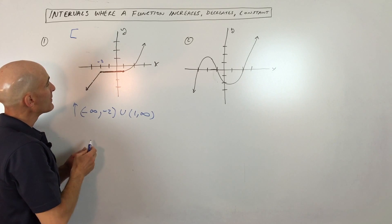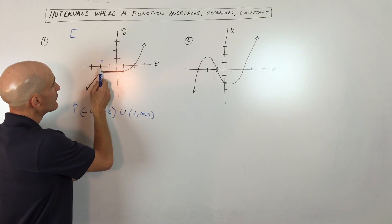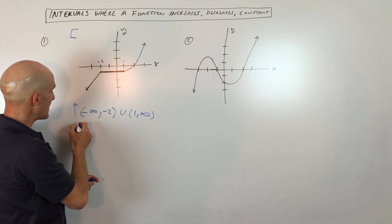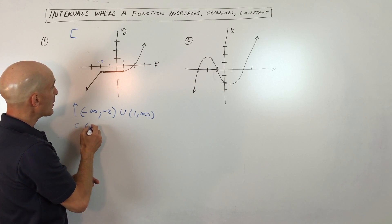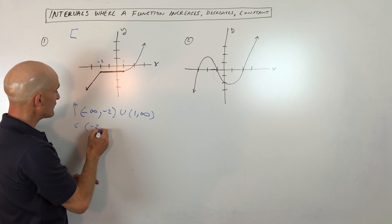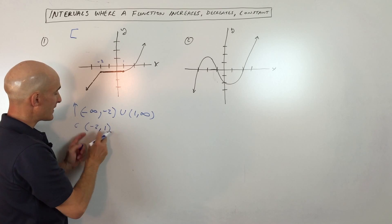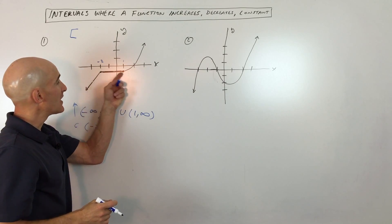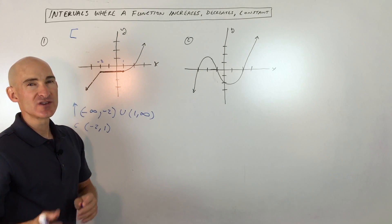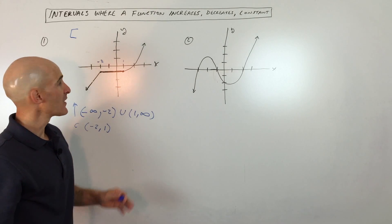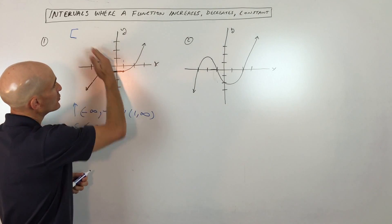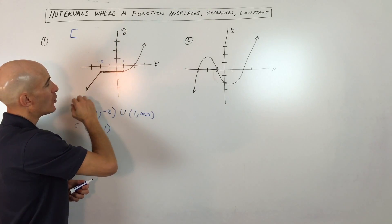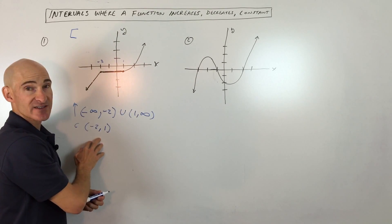So this is the increasing interval. Now you can see it's constant from x equals negative two to x equals positive one. We're going to say constant — I'll just put a C there — and go from negative two to positive one. Notice we're using parentheses, the open interval; it doesn't include the endpoints for increasing, decreasing, and constant intervals. And nowhere is the graph decreasing, so it just has these increasing and constant intervals.